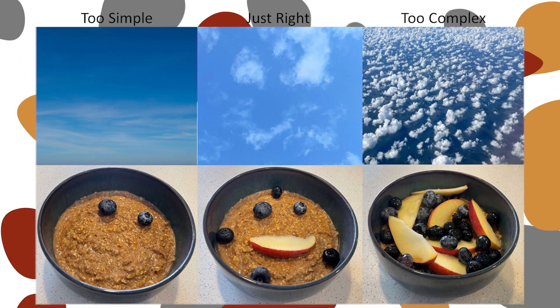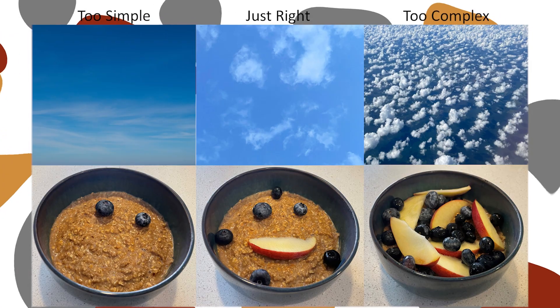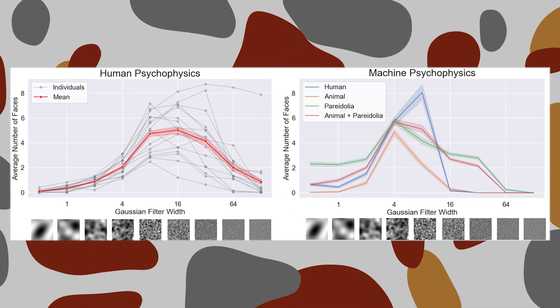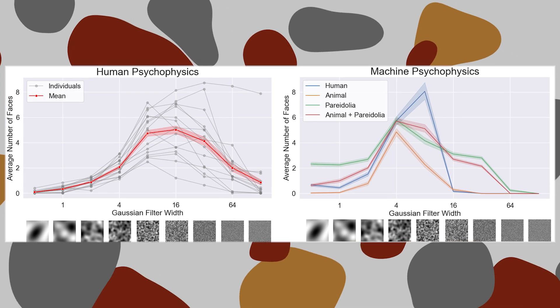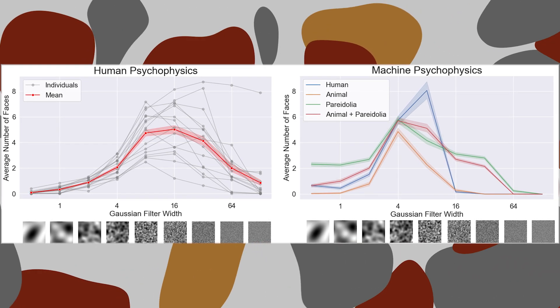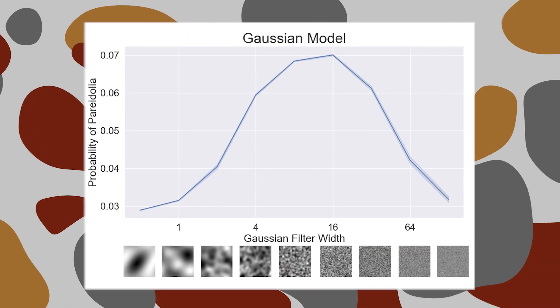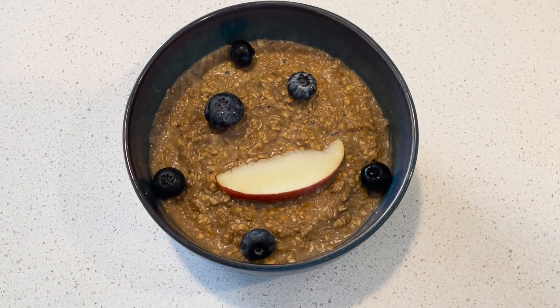One thing we found is a sort of goldilocks zone. In the middle of this zone, you have processes where there are enough spatial frequencies that you might see some eyes, a nose, and a mouth on occasion — but they're not too complex. It's not like TV static, where there's so much complexity you can't make heads or tails of it. There's just enough complexity that it's likely you see a face. We can measure this in both humans and machines, show them images of varying complexity, and what we find is that both humans, machines, and our mathematical model show this beautiful little curve — the goldilocks zone, or the pareidolic peak.